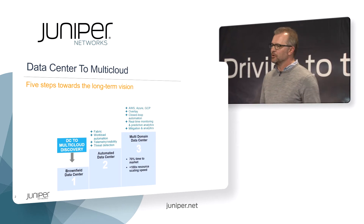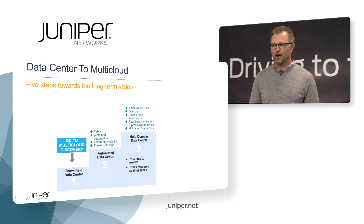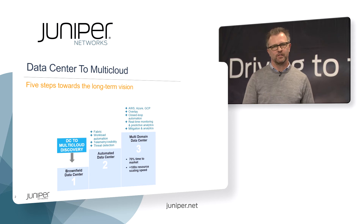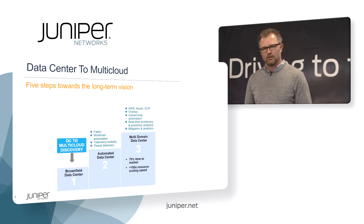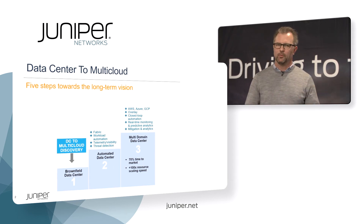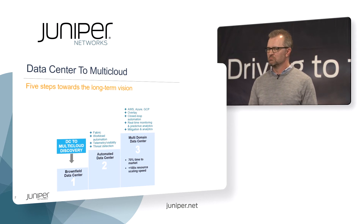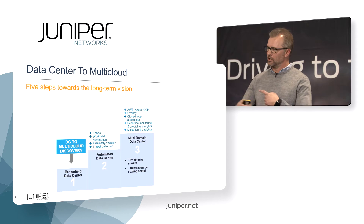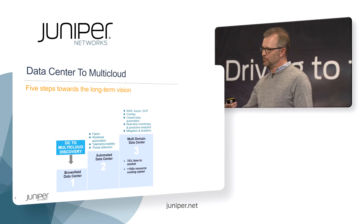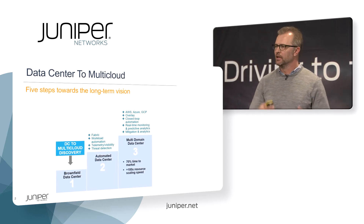In step three, we start to think about the multi-domain data center — the idea of thinking about your data center, your public cloud presence, and your workload orchestration layers as one cohesive unit. We'll look at your Amazon, Azure, and Google Compute cloud presence. We'll start to think about overlay networks and tying things together using SDN. We'll think about closed-loop automation processes and how your workload automation deployments tie into network policy to create networks on demand.